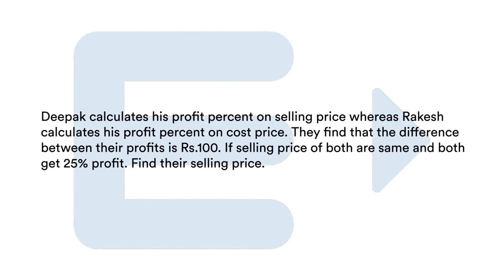Debat calculates profit percent on selling price, whereas Rakesh calculates profit percent on cost price. They find that the difference between their profits is Rs.100. The selling price of both are the same and both get 25% profit. Find their selling price.